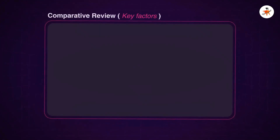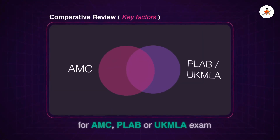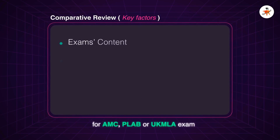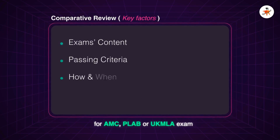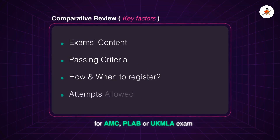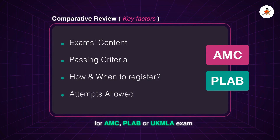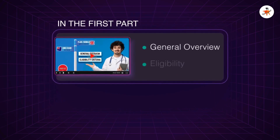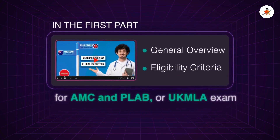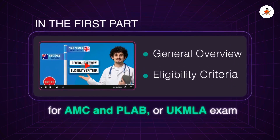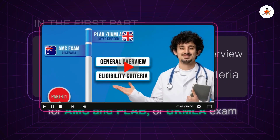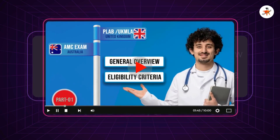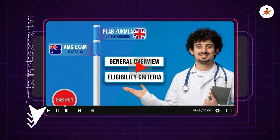We are going to have an in-depth comparative review regarding these two exams' content, passing criteria, how and when to register, as well as attempts allowed to pass these two exams. In the first part we have already covered more details regarding general overview as well as eligibility criteria for AMC and PLAB or UK MLA Exam. Do not forget to watch the first part of the series — we have provided the link here as well as in the description section.